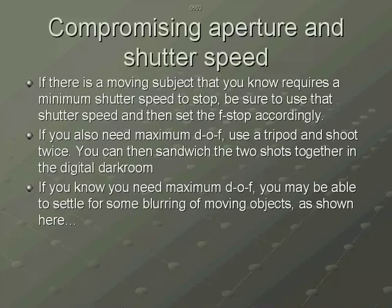The faster the shutter speed you use, the more action you'll freeze. The slower the shutter speed you use, the more light you'll be able to gather into the lens — to the point where you can even have an exposure several seconds long. It can be pitch black or nearly pitch black outside and you'll still get a picture, as long as the camera is on a tripod.